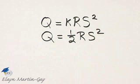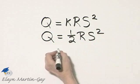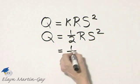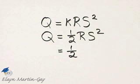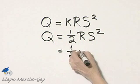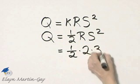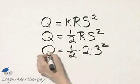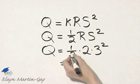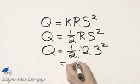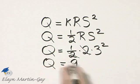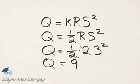Notice now we're asked to find Q when R is 2 and S is 3. The 2s divide out and I have 3 squared, which is 9. So Q is 9 when R is 2 and S is 3.